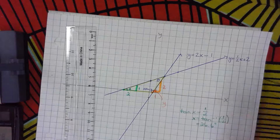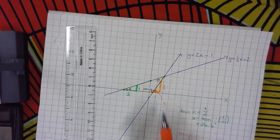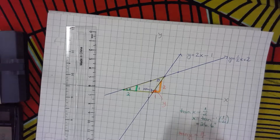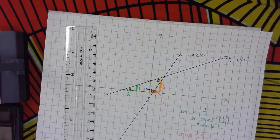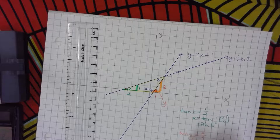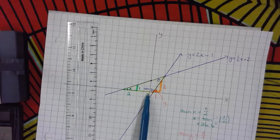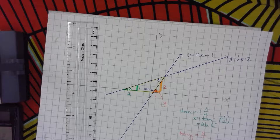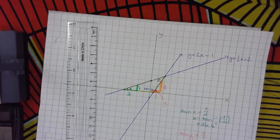Now for the orange triangle I'll find angle y. Tan of y equals opposite over adjacent, which is 2 over 1, so tan of y equals 2. Therefore y equals tan inverse of 2, which gives me 63.4 degrees. The supplementary angle beside it is 180 minus y, so 180 minus 63.4 equals 116.6 degrees.